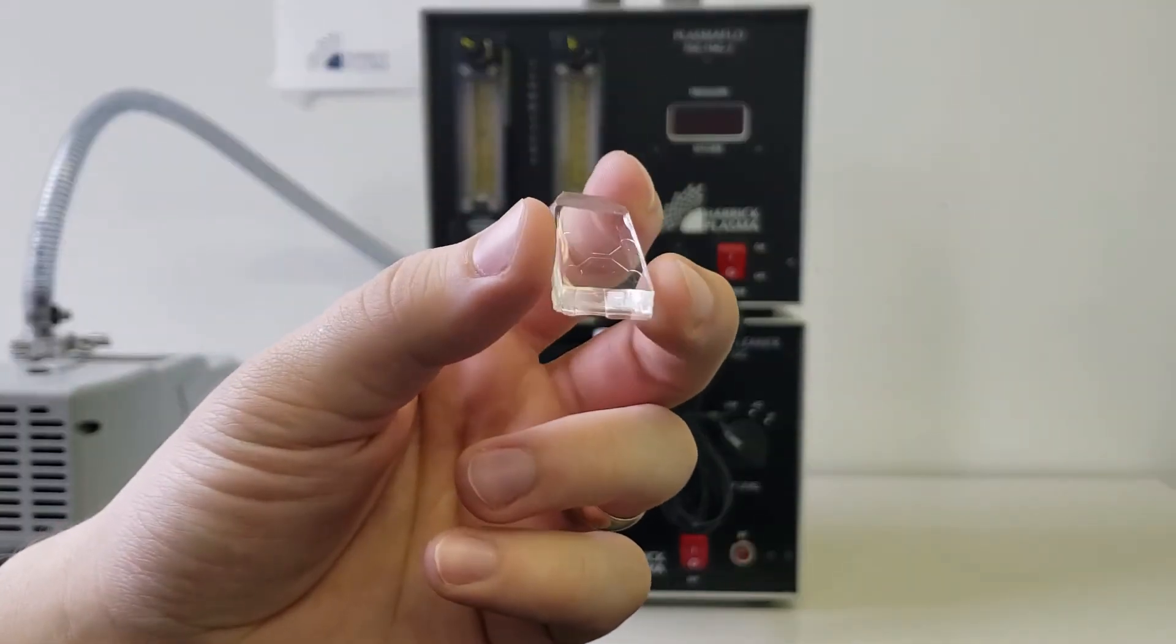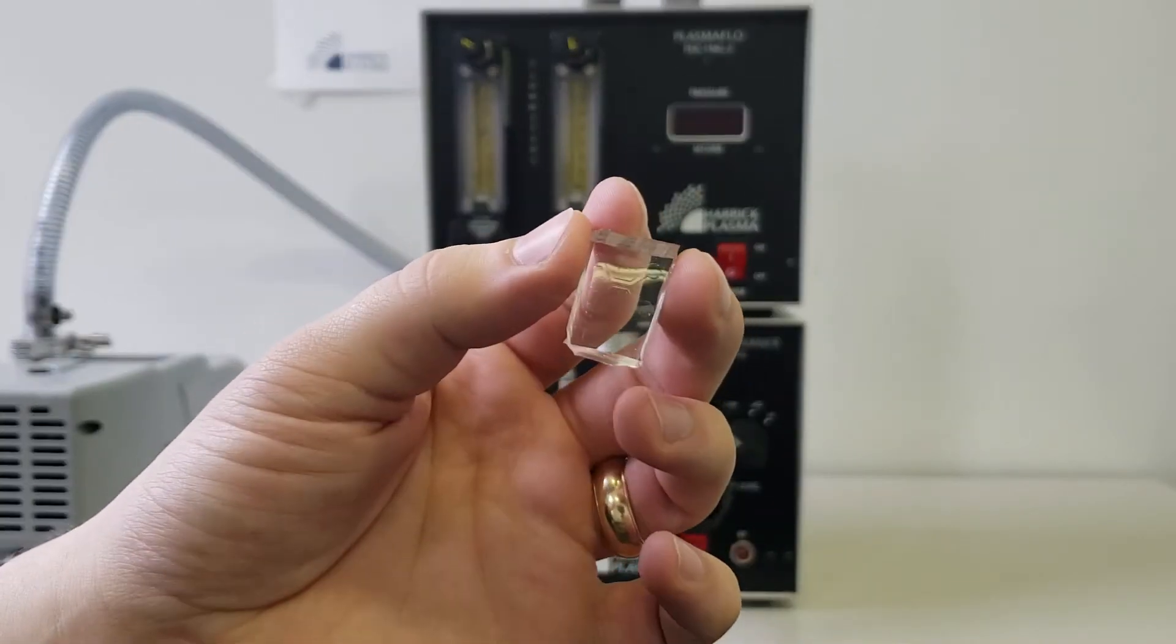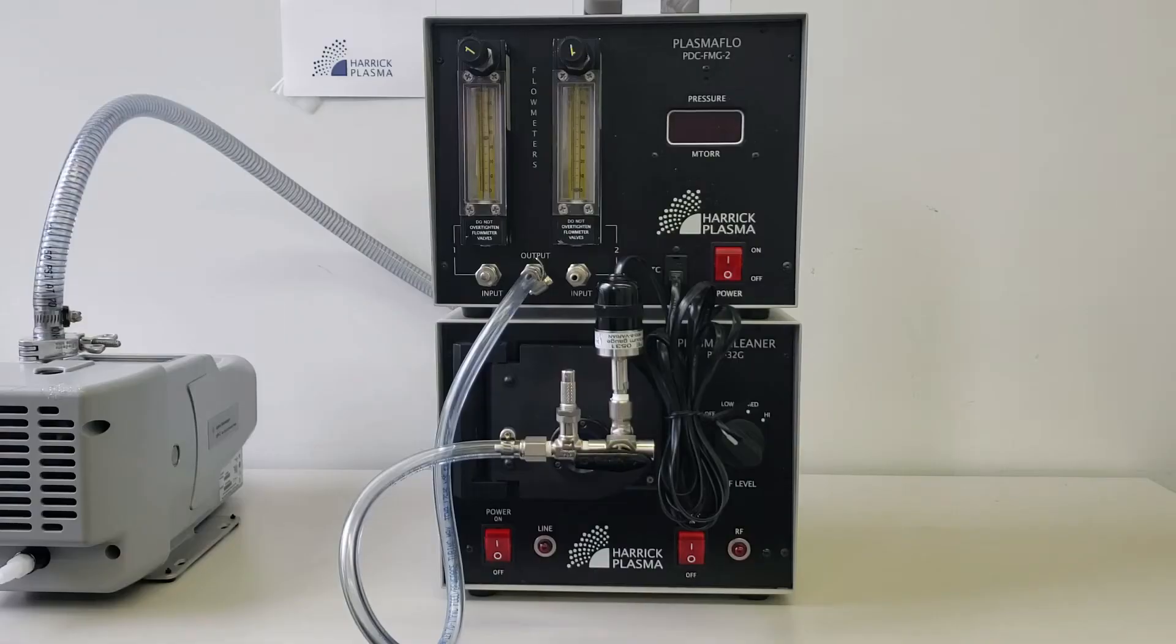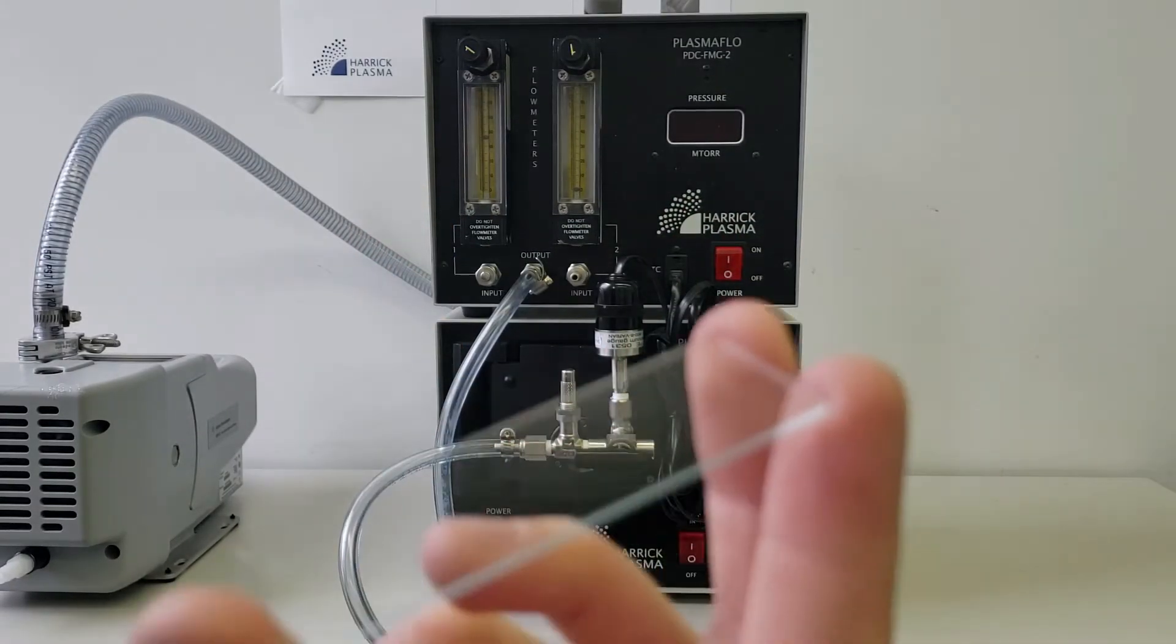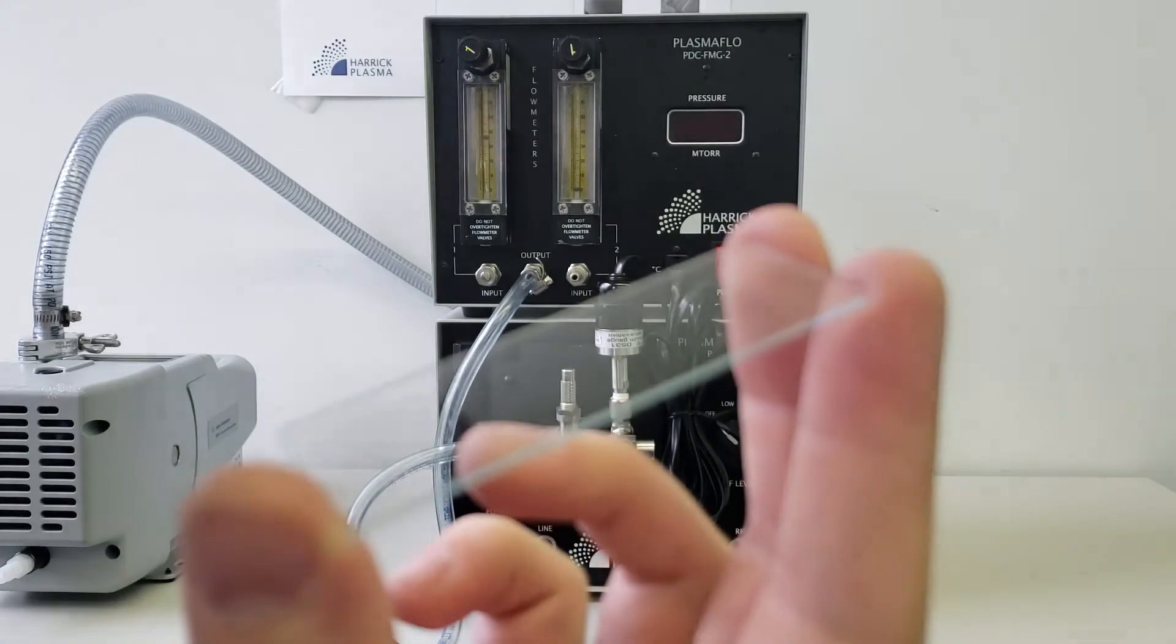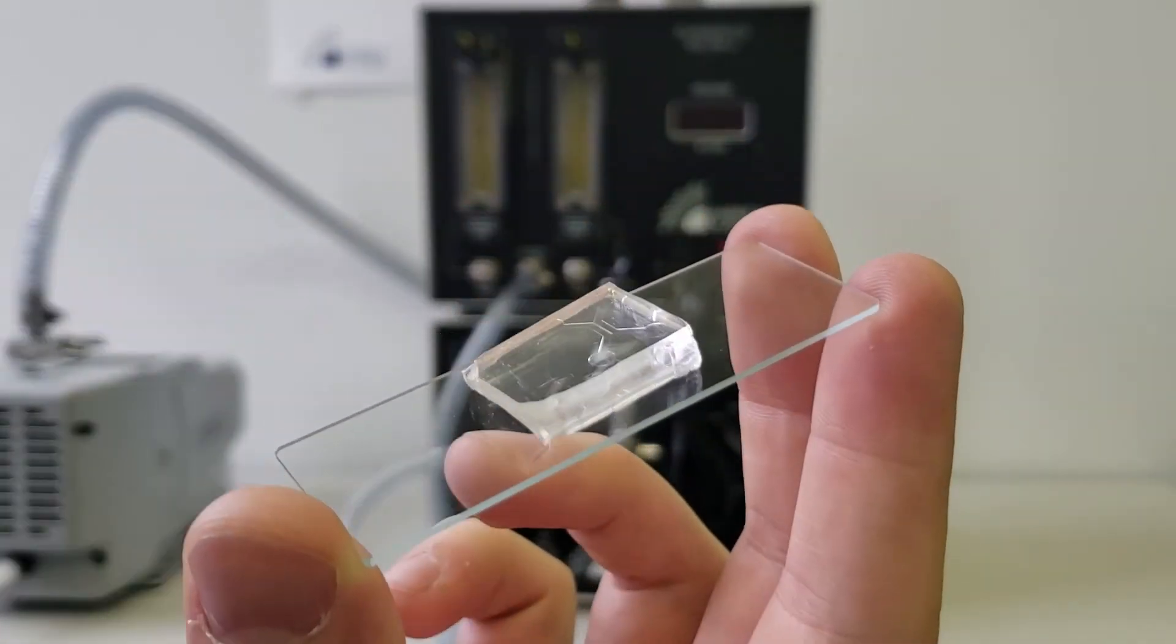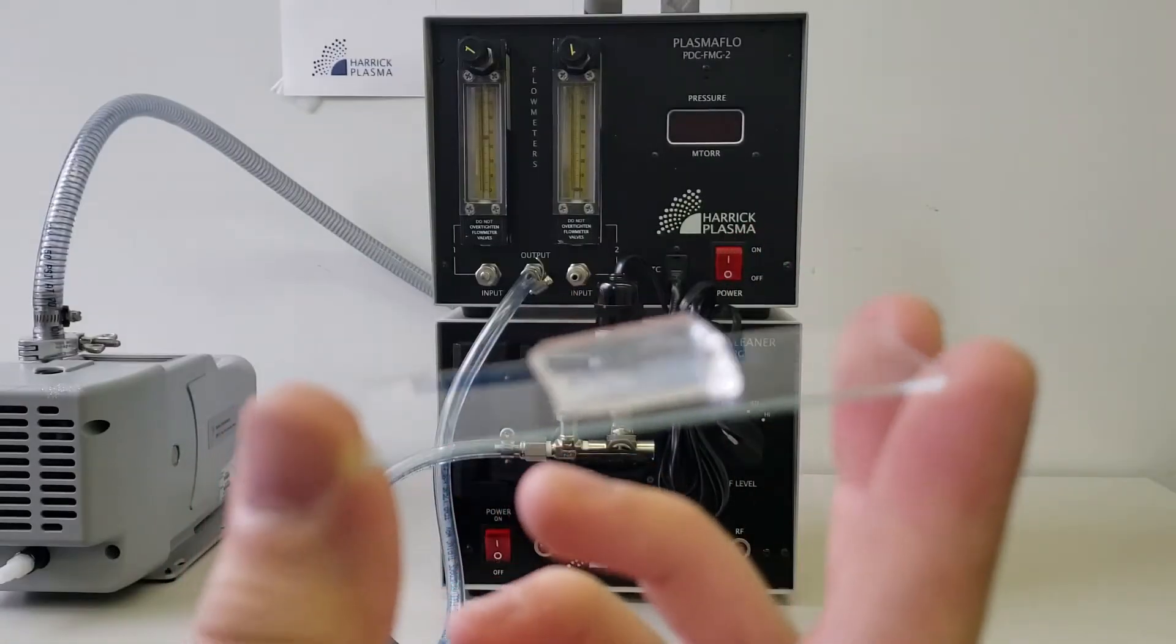To begin, you will need a PDMS microfluidic device and a glass slide. The goal of plasma treatment is to form watertight covalent bonds between the PDMS microfluidic device and the glass slide.